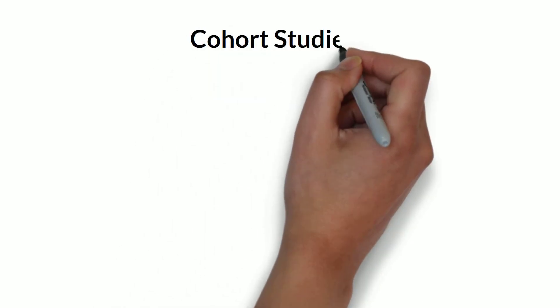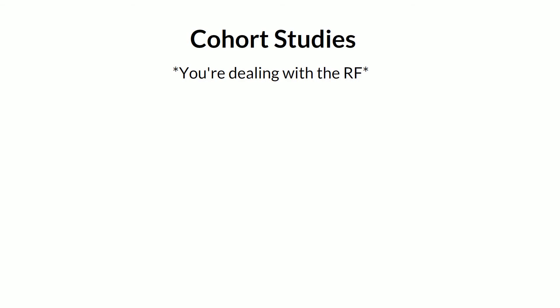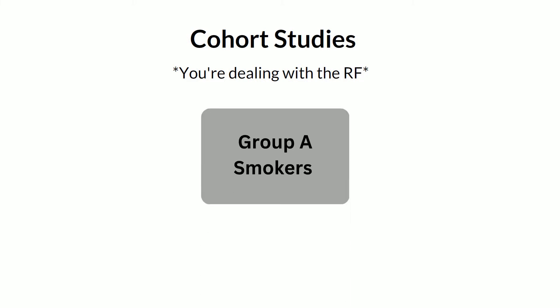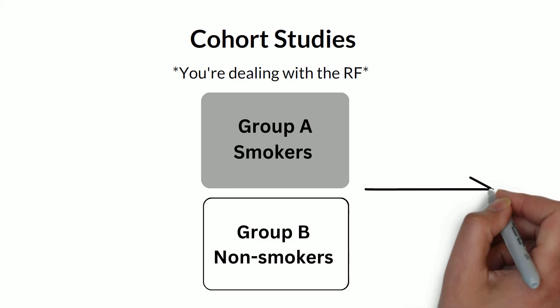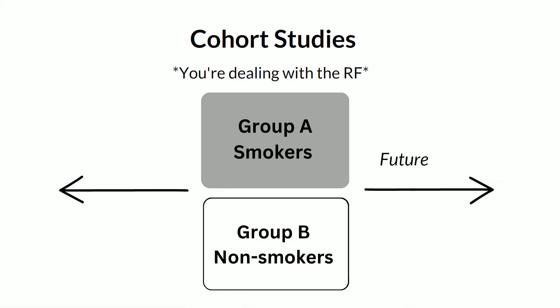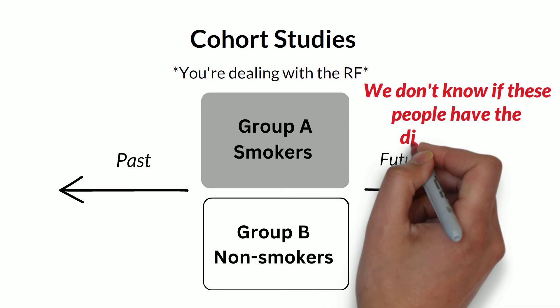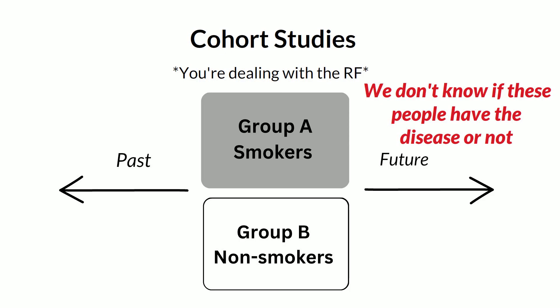Now let's move on to cohort studies. In cohort studies, you're dealing with the risk factor, not the disease — not the cases and controls. You're dealing with a set of people who have the risk factor and a set of people who don't. In a cohort study, you have a group of people with the risk factor and without the risk factor, and we don't know about the disease status in these two groups. We only know about the risk factor at the moment.